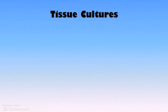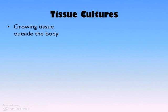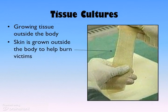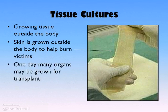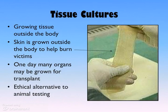Tissue culturing is another rapidly developing area of research and development. It is growing tissue outside of the body — kind of like we've started to be able to grow skin — which can be used to help burn victims. The idea, of course, is to move from individual tissues to growing organs that can be used for transplant. Not quite there yet, but we're getting awfully close.